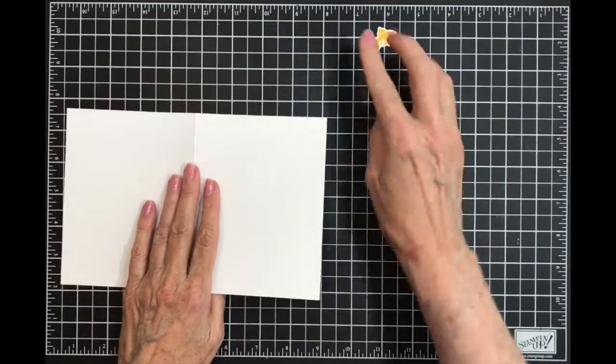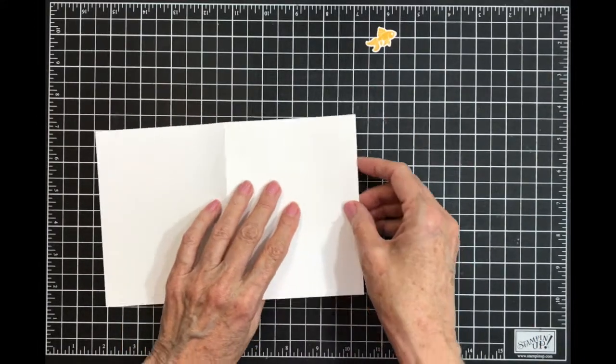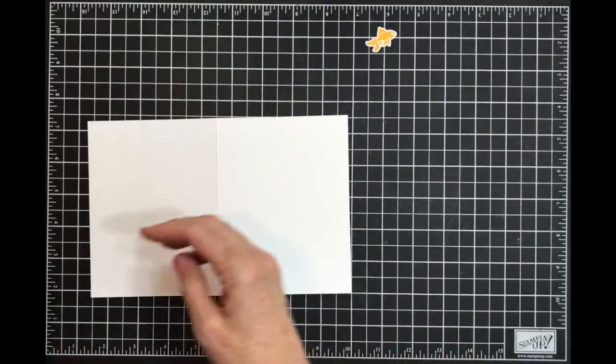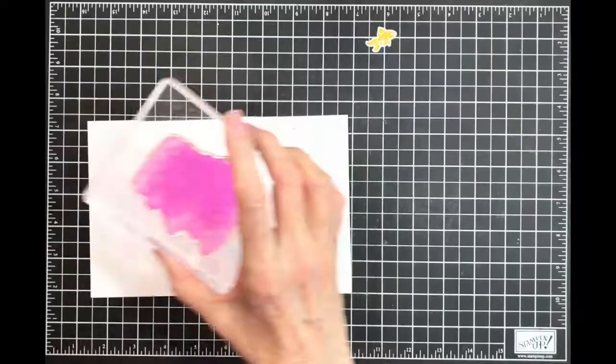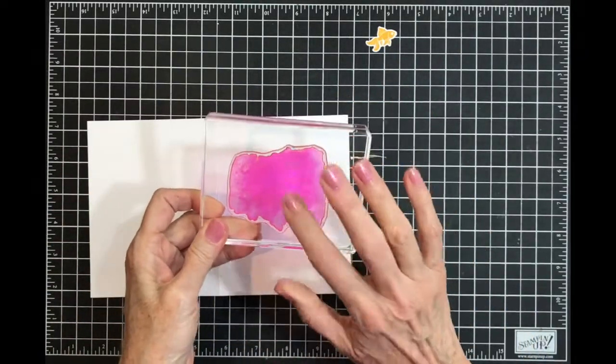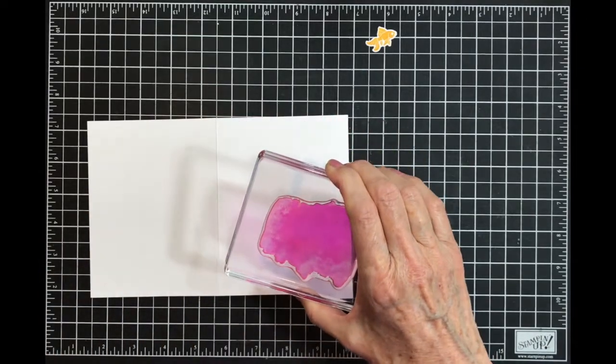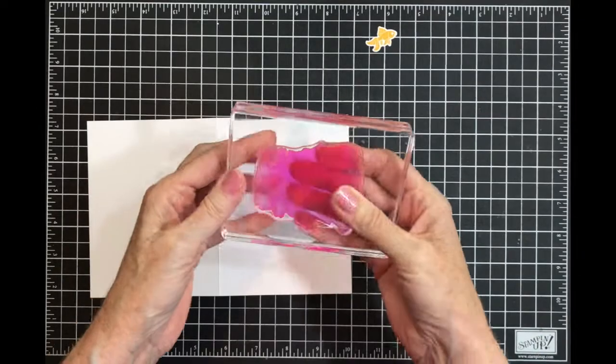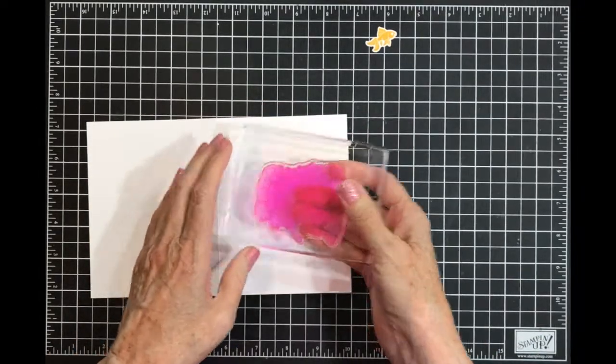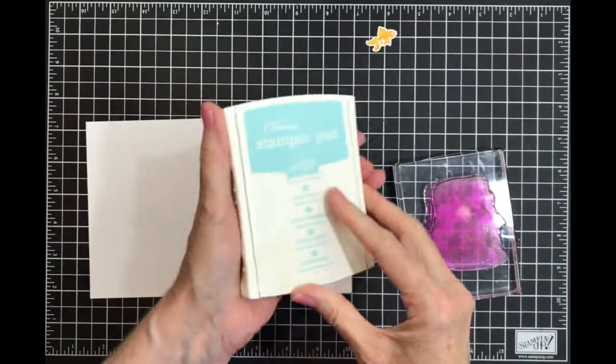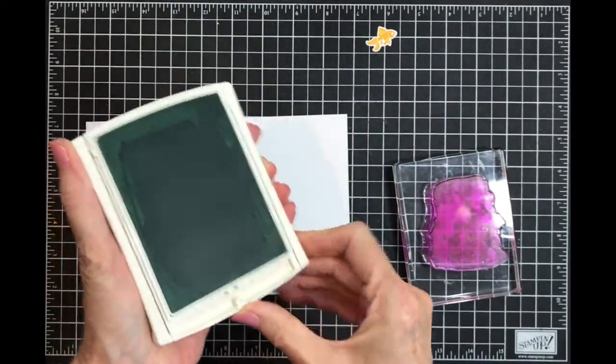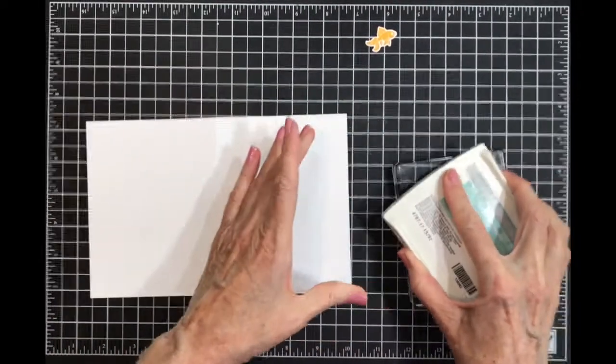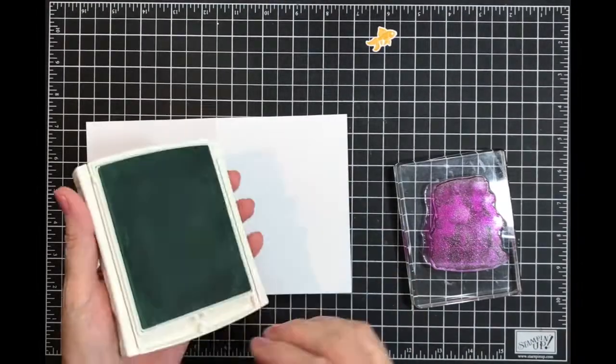Now it's time to give him some water. I'm going to use my piercing mat because this image from the Love What You Do stamp set has to have something behind it or the center doesn't come out. I've found if I use this piercing mat, it works.